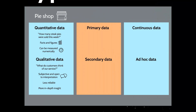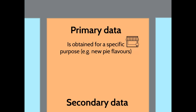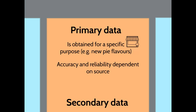Primary data is obtained for a specific purpose — it's brand new information that doesn't currently exist and is sourced by an organisation for a specific purpose. For example, if the pie shop wanted to ask people what kinds of flavours they should introduce, they'd go out and ask people directly. As a result it's accurate and reliable, and it helps you answer a very specific question. However, a problem with primary data is that it can be very expensive — you have to go out sourcing data, asking people on the streets, etc., so it's not particularly cost effective.